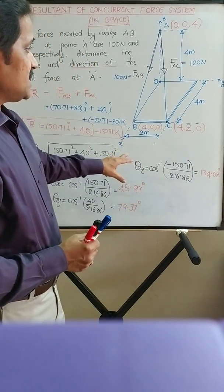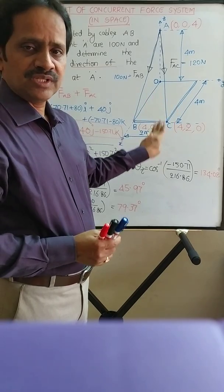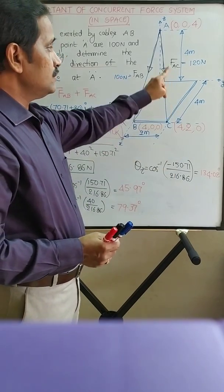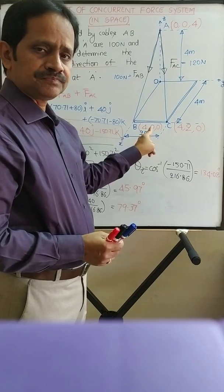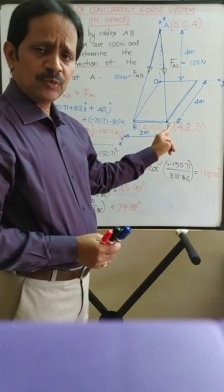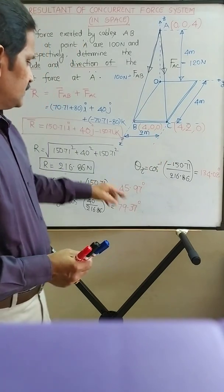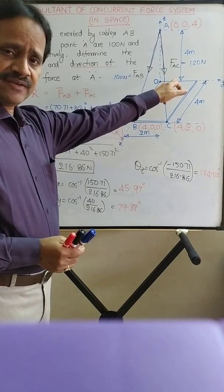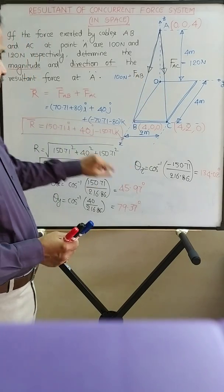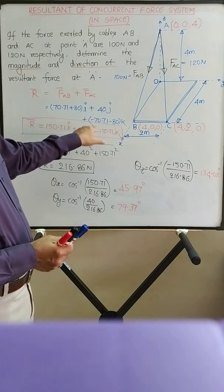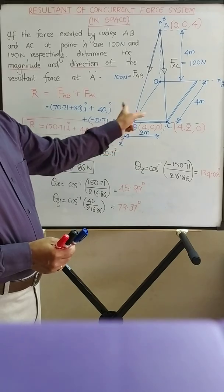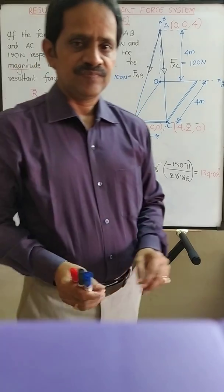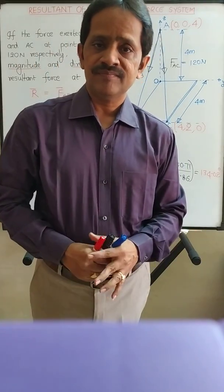So there are three steps to solve this problem. First, write the coordinates of the points. Second, write the force vectors for FAB and FAC. Third, find the resultant force as the sum of the force vectors. Thank you.